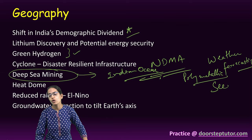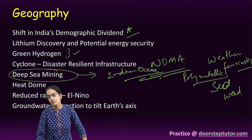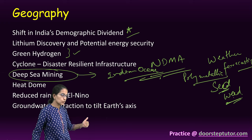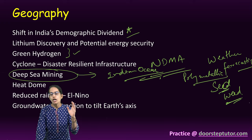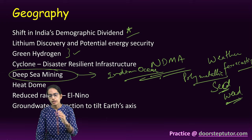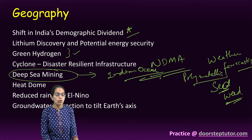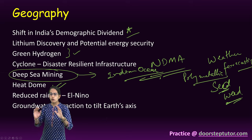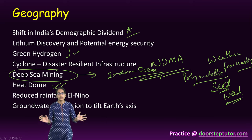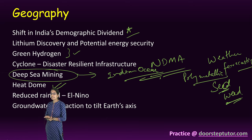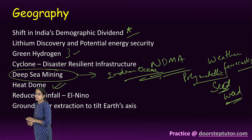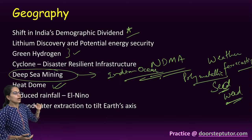Besides this, we also talk about seaweed farming — another important farming practice — with reducing land because of climate change, a shift in farming practices where seaweed farming is another important topic. Heat dome is an extremely important topic; a lot of regions in the United States have been witnessing heat domes.